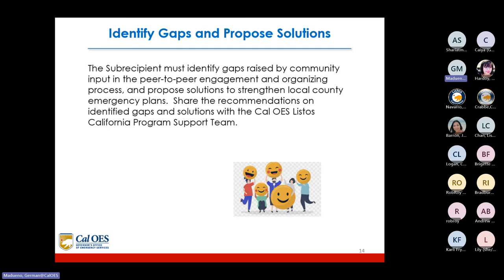The sub-recipient must identify gaps raised by community input in the peer-to-peer engagement and organizing process, and propose solutions to strengthen local county emergency plans. Recommendations on identified gaps and solutions must be shared with the CalOES Listos California program support team.